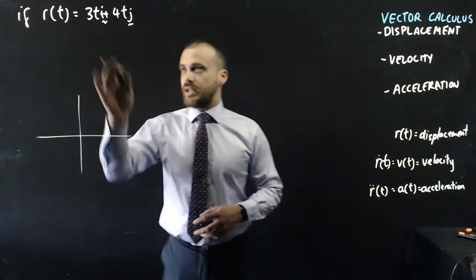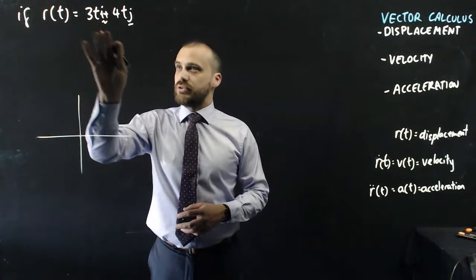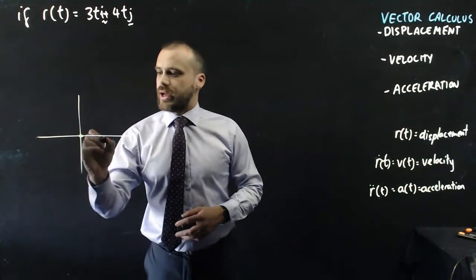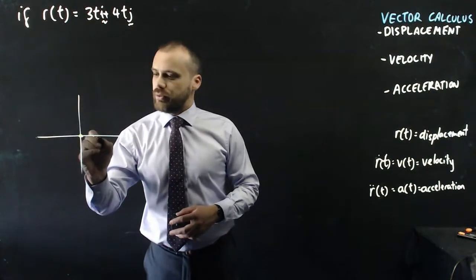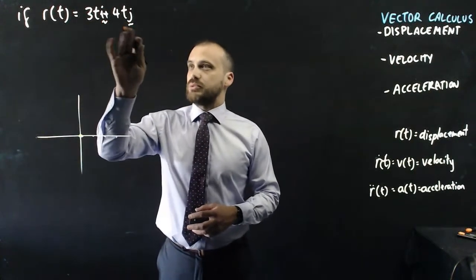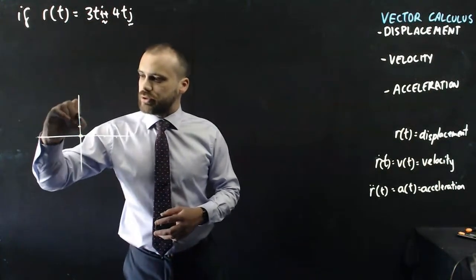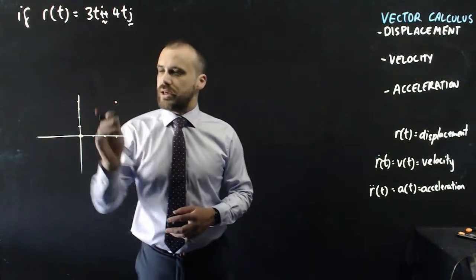So for instance, at time 0, we'd have 0i and 0j. At time 1, we'd have 3 times 1, which is 3i, and 4 times 1, which is 4j, and the particle would be there.